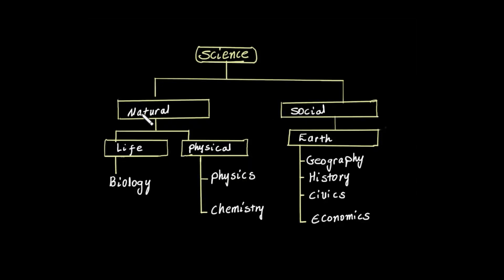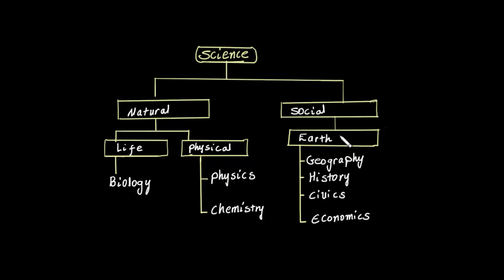In natural sciences, we have life sciences and physical sciences. Life sciences include biology. Physical sciences include physics and chemistry.